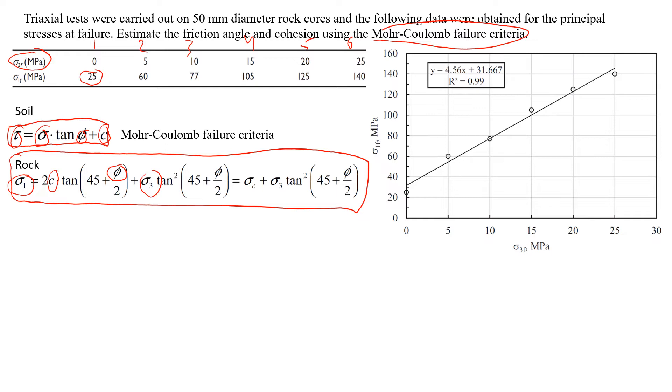So we prefer to use principal stresses and these principal stresses at failure we can put f, f means failure. Now let's see how we can use this formula and how we can analyze data from this table to obtain friction angle and cohesion.